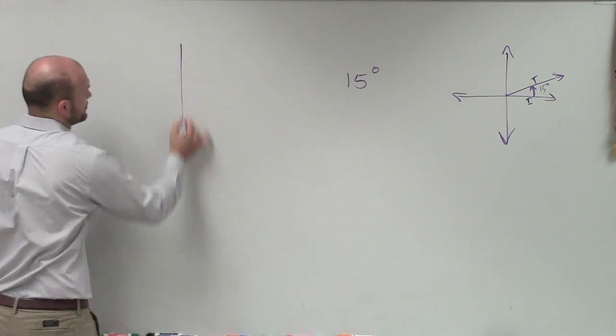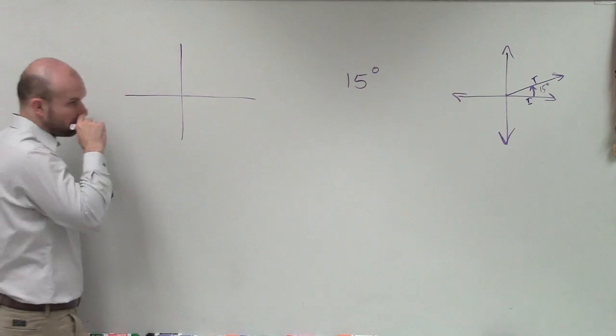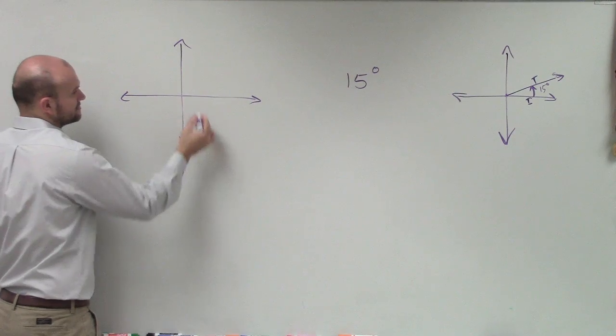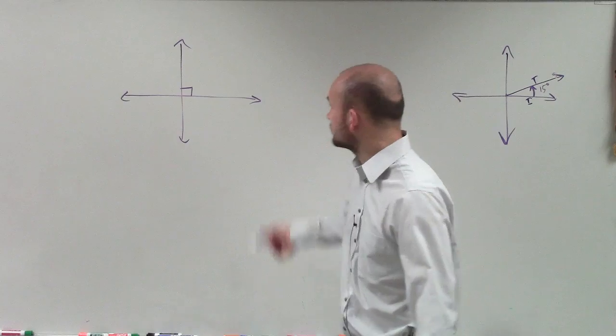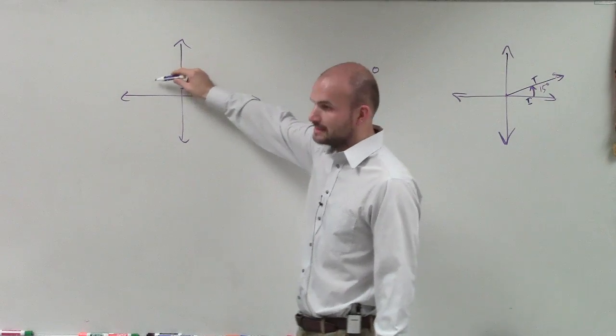Now, the next thing we want to make sure we understand is, remember, when we have our Cartesian coordinate system, our x and y-axis are perpendicular to each other, right? So that represents 90 degrees, 90 degrees.